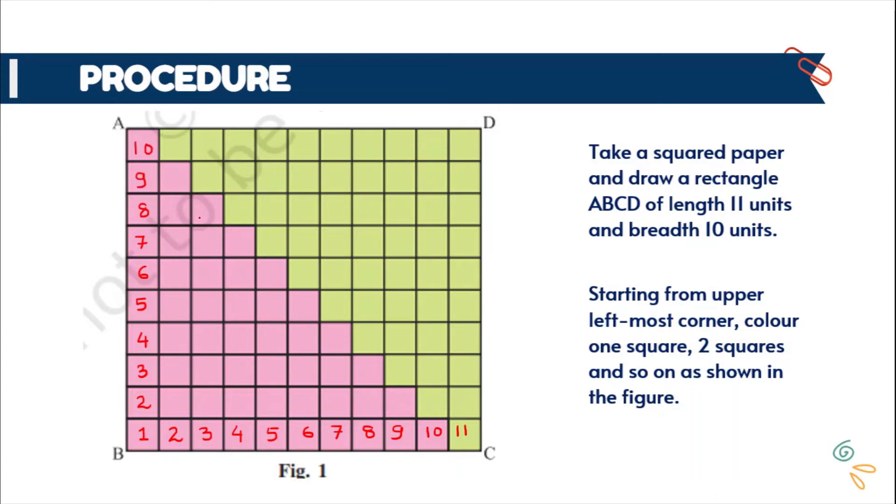Now starting from upper left most corner, you can color one square as shown here, then 2 squares and so on as shown here.